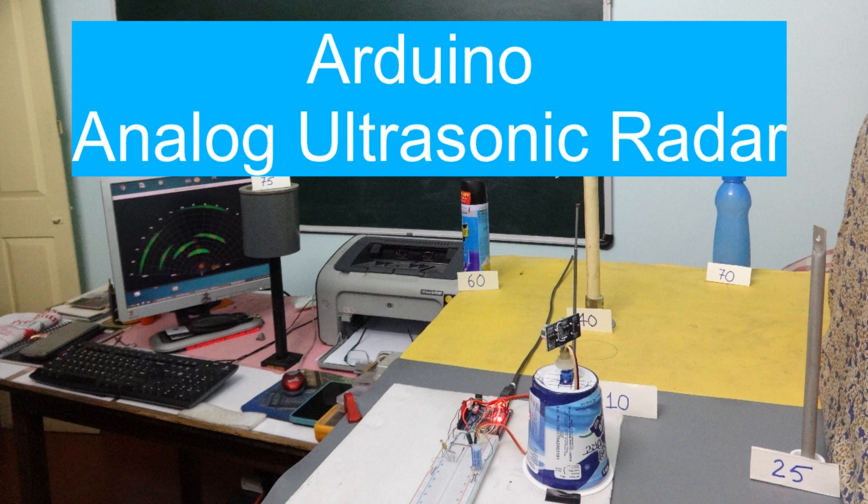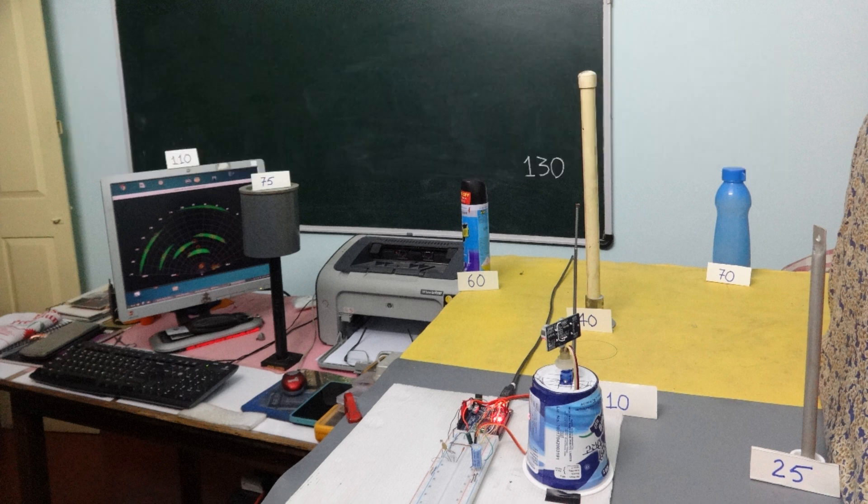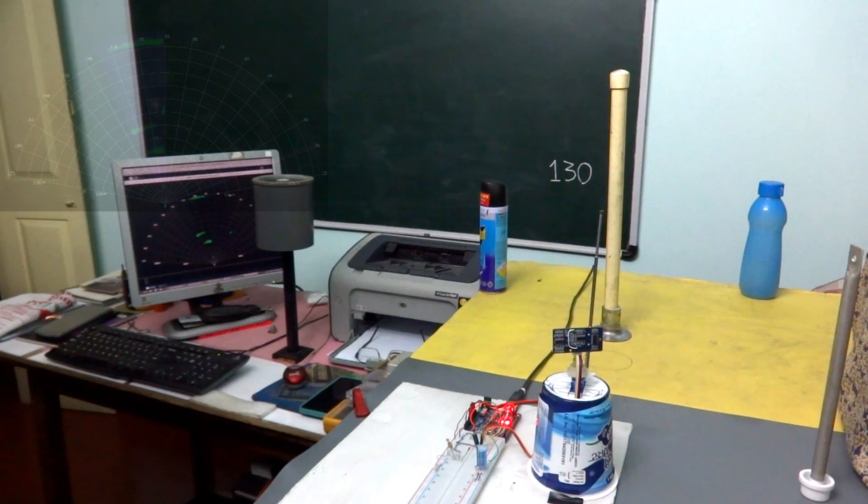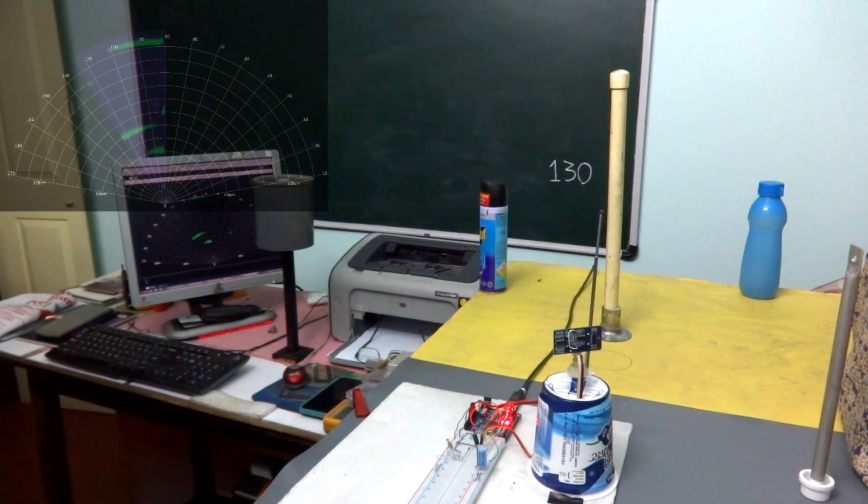I have built an analog ultrasonic radar based on an Arduino and the Seeed Studio Grove ultrasonic sensor. The analog signal is tapped from an intermediate point on the Grove sensor.